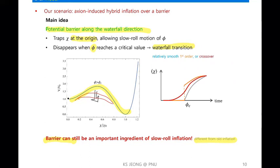The waterfall field reheats the universe. There might be some dilution from entropy production during reheating. Initially there may be some inhomogeneities produced by bubble nucleation, but they might be diluted by entropy production. The speaker thinks the mass hierarchy between the waterfall field and the inflaton means the inhomogeneity from the bubbles would not make any problem in our scenario.